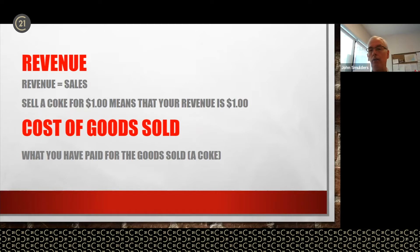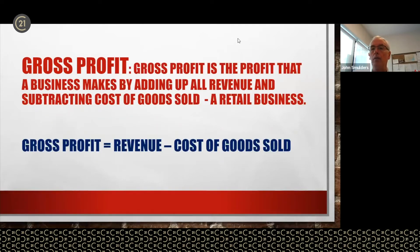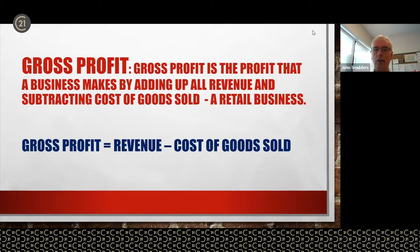They're talking about how much gross money they've taken in. Then there's costs of goods sold — what you have paid for the goods sold, like how much you paid for the Coke. Gross profit is the profit a business makes by adding up all the revenue and subtracting the costs of goods sold. Sometimes a seller will tell you the gross profit — they'll say 'I made $200,000 last year.' Is that revenue, gross profit, or net operating income? You can't assume it's the NOI. You have to know these terms to determine what the seller is actually talking about.